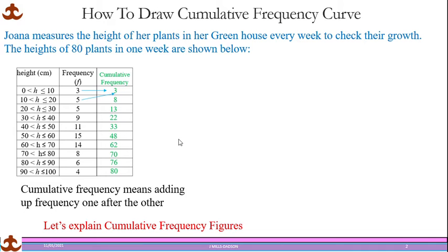They could also ask how many plants measured over 80. Using the frequency column for over 80, it's 6 plus 4 — you pick the frequency and add downwards. Do not use the Cumulative Frequency column for this, because the value 76 represents 0 to 90. If you want 80 or more, it's 6 plus 4. Be very careful about this distinction.